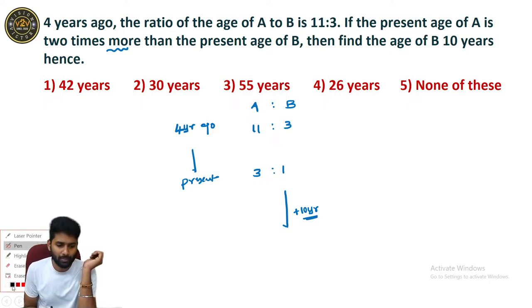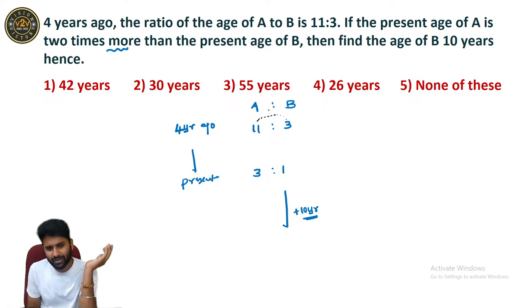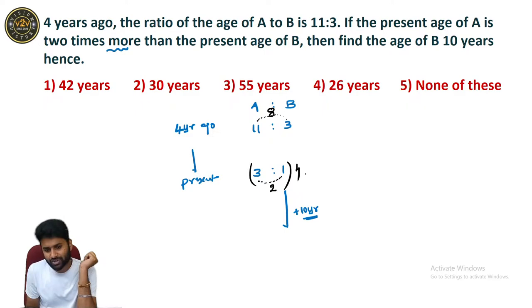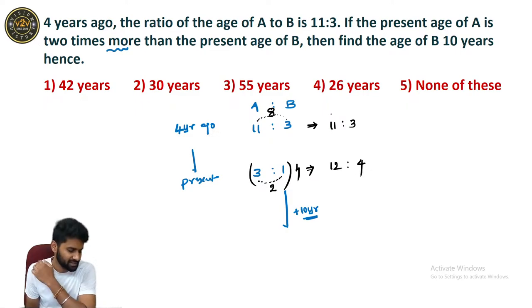The key point here is that the difference of two persons' ages is always the same over any duration. Now you can see the difference: 11 and 3 gives a total difference of 8 units, and 3 and 1 gives a difference of 2 units. You have to equate the opposite differences. Multiply this ratio by 4 to get 12 to 4. Now you can see the same difference: 11 and 3 differ by 8 units, and 12 and 4 also differ by 8 units.